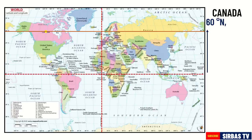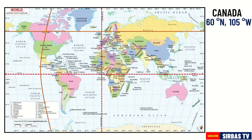The third step is to draw a vertical line to the point where Canada is located. The degree of longitude where the vertical line will lie will serve as the longitude coordinate of this place. In this case, we have 105 degrees west. It is west since Canada is located on the western hemisphere of the map.